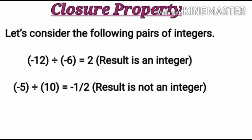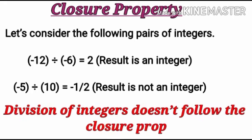So 2 is an integer. But if we divide -5 by 10, the result is equal to -1/2. Here -5 is an integer, 10 is an integer, but if we divide -5 by 10, the result is -1/2 which is not an integer. Therefore, division of integers does not follow the closure property.